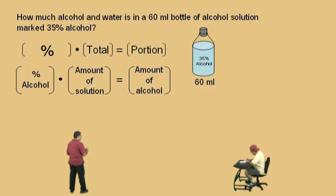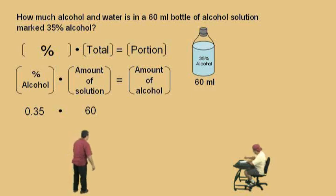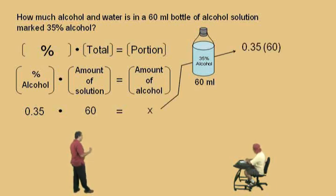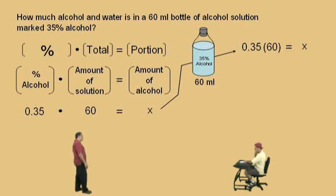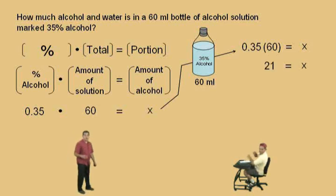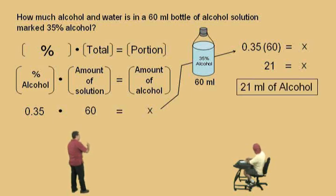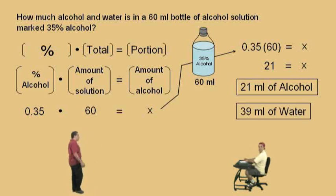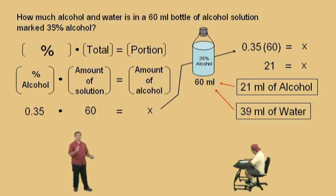Our percent alcohol as a decimal is 0.35, our total amount of solution is 60 milliliters, and the amount of alcohol is what we're looking for, so we mark that as x. On the left-hand side, 0.35 times 60 equals x. Take 0.35 times 60 and you get 21. So in this 60 milliliter bottle, there are 21 milliliters of alcohol. If there's 21 milliliters of alcohol, how much water is in there? Subtract 21 from 60 — you get 39 milliliters of water. Notice the two must add up to 60. And don't forget: if it was 35% alcohol, it means it was 65% water.